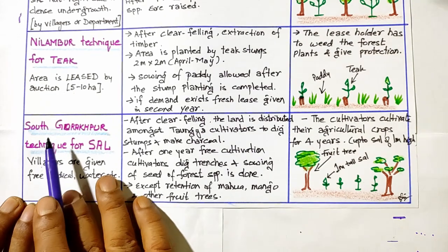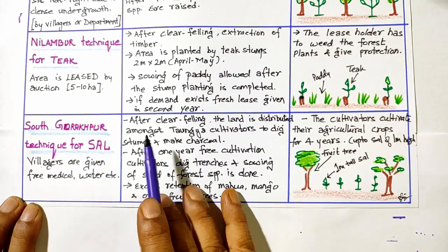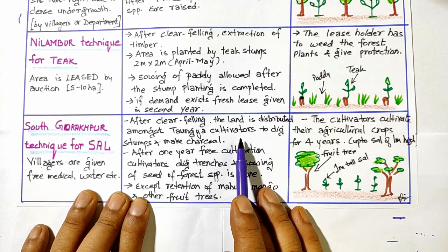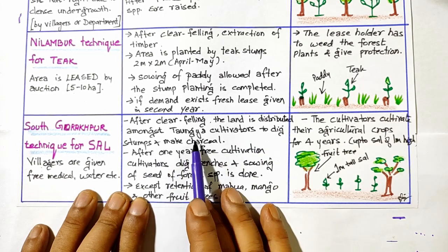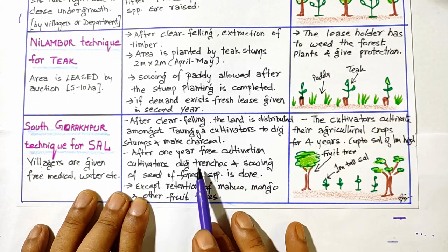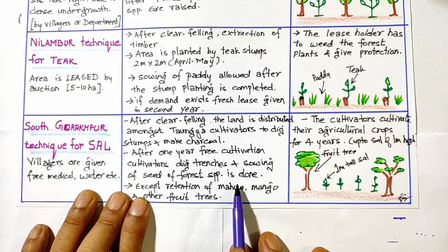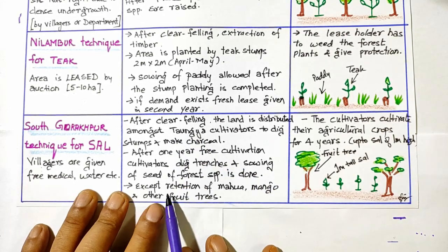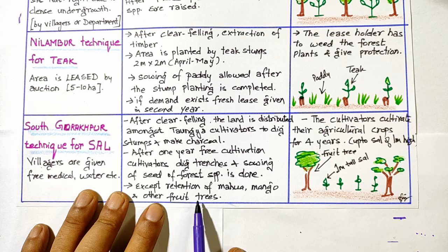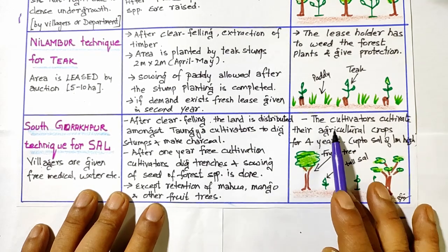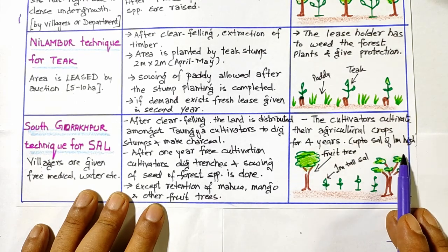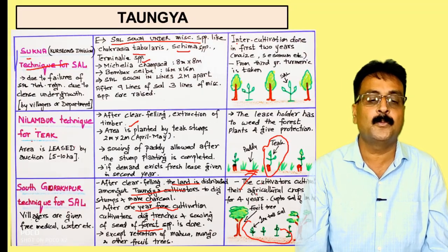The South Gorakhpur technique for sal is an example of village taungya. After clear felling, land is distributed among taungya cultivators to dig stumps and make charcoal. After one year of free cultivation, they also dig trenches and sow forest species seed. During clear felling, trees like Madhuca indica (mahua) and mango or other fruit trees are retained — not felled. In that area, cultivators cultivate agriculture crops for four years until the soil mounds reach one meter high.